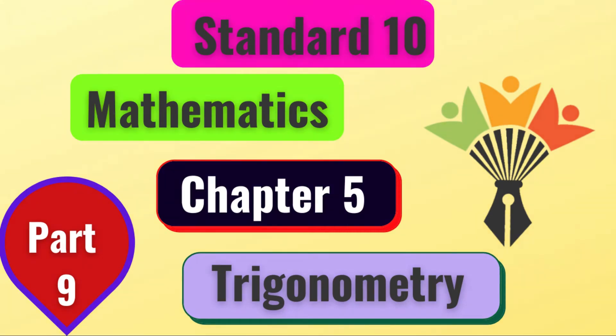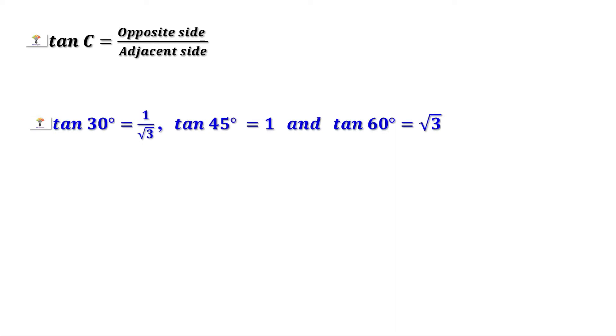Welcome to Maths Companion. Let us recall what we have learned in the last video. We have seen that tan of an angle is opposite side by adjacent side. We have also learned that the value of tan 30 is 1 by root 3, the value of tan 45 is 1, and the value of tan 60 is root 3.